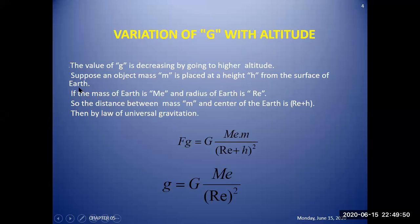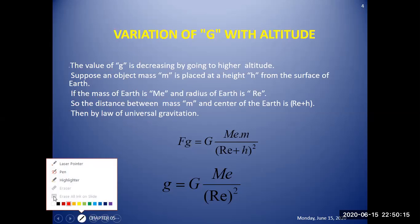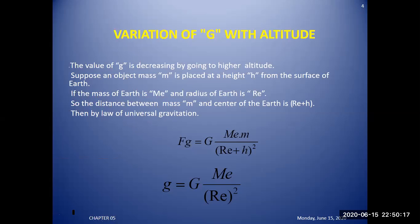Suppose an object of mass M is placed at a height h from the surface of the earth. If the mass of the earth is M_e and the radius of the earth is R_e, then the distance between the mass M and the center of the earth is R_e plus h. We will apply Newton's law of gravitation using this concept.